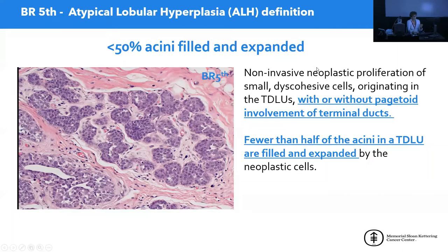The same cells are found in ALH, atypical lobular hyperplasia, which involves only less than 50% of the acini of a terminal duct lobular unit. They are expanded and filled, but the proliferation is more limited in extent. If there is involvement of the ducts, that does not exclude the diagnosis of ALH — it's really the amount of expansion that is present. We can have pagetoid involvement of the TDLUs by ALH.